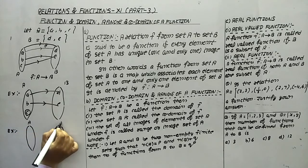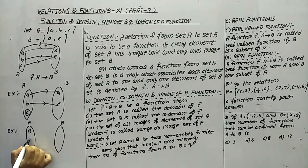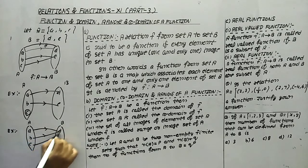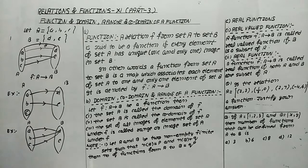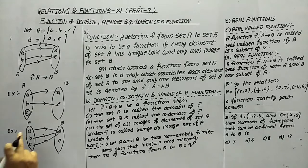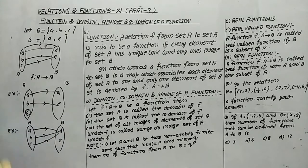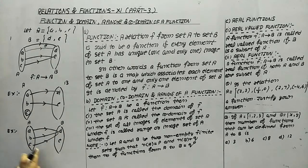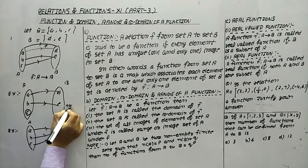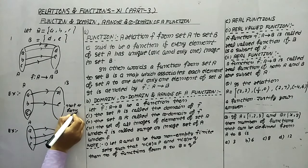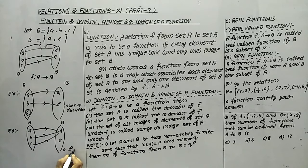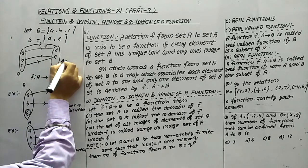One more example: I have set A with elements A, B, C and set B with elements D and E. Mapping: A to D, B to D, C to D. Look at this — this is a function. The reason: every element of set A is used, and every element of set A has a unique image, which is D. That is why this is a function. The previous case was not a function, but this one is.